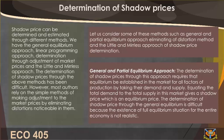Shadow prices can be determined and estimated through different methods. These include the general equilibrium approach, linear programming approach, determination through adjustment of market prices, and the Little and Mirrlees approach. However, most authors rely on simple methods of making adjustments to market prices by eliminating distortions noticeable in them.